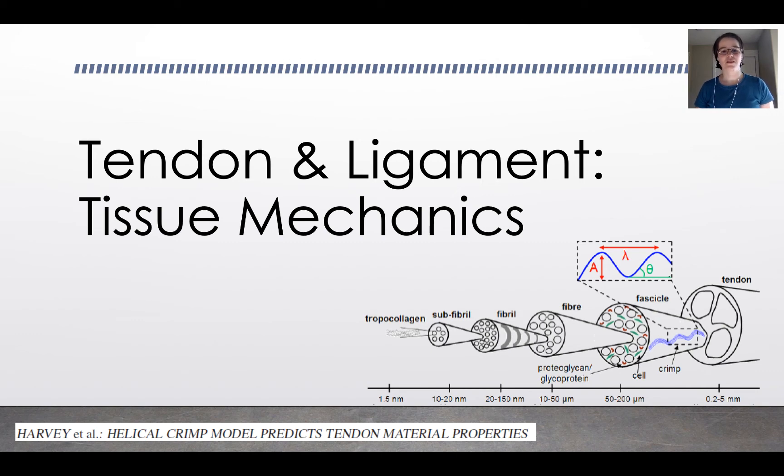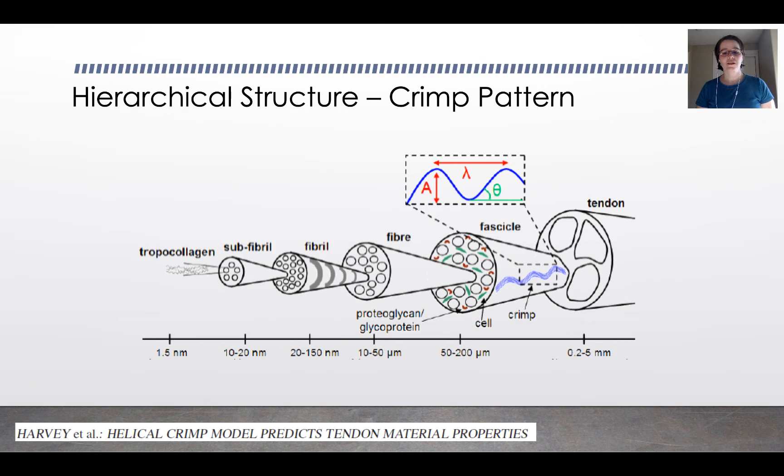Welcome to this video about the biomechanics of tendon and ligament. In this video, we'll be focusing in particular on the tissue mechanics of tendon and ligament. Tendon and ligament has a hierarchical structure that gives rise to a crimp pattern because of the collagen fibrous structure as we discussed in the previous video. This actually gives rise to some of the really interesting behavior of tendon and ligament.